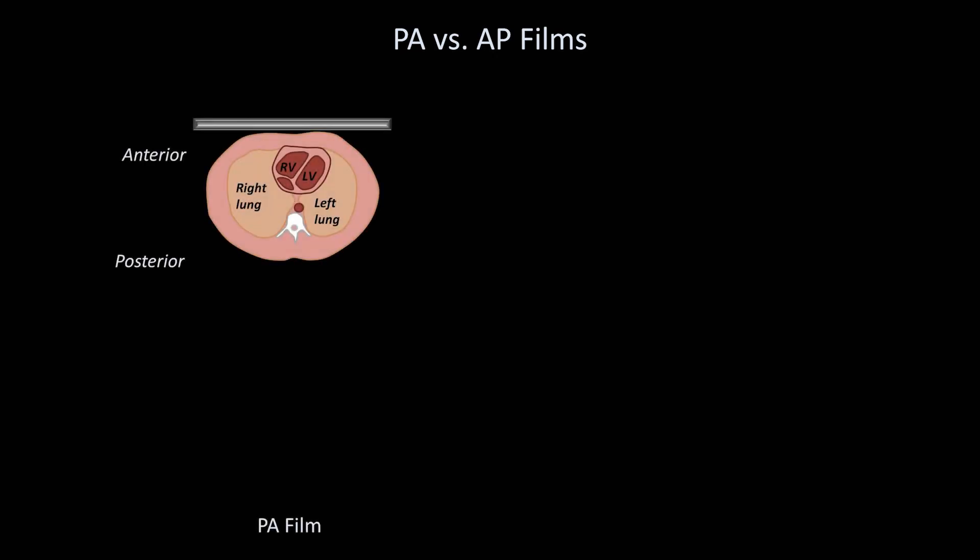Before discussing specific findings, I need to review another very important difference between PA and AP films. Let's start with a PA film — here is an axial cross-section through the thorax at the level of the heart.